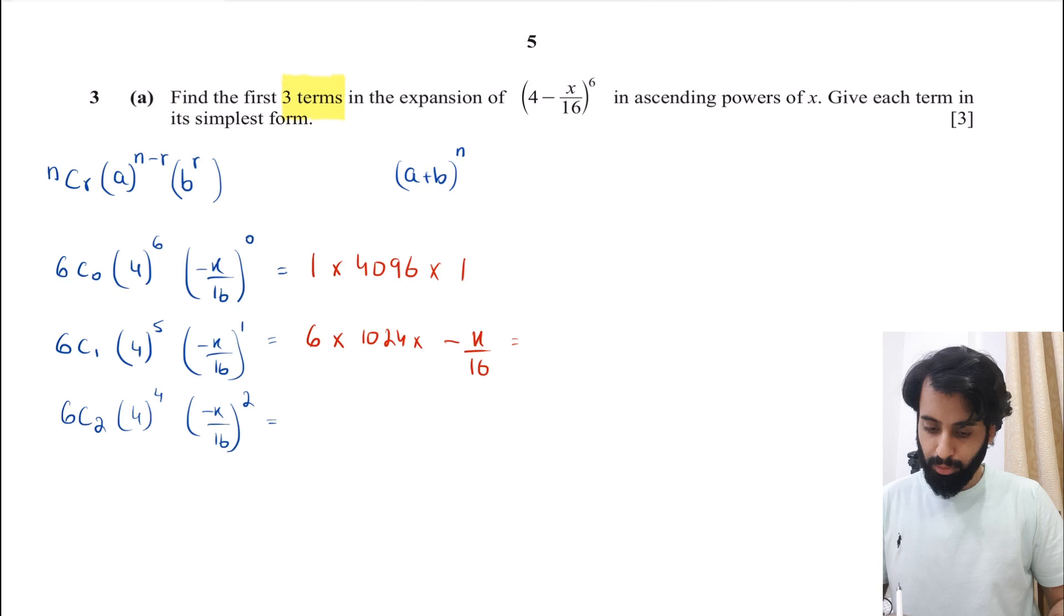And then you have 6C1, which is 6. You can use your calculator to work it out, × 4^5, which is 1024 × minus. Now remember, you have to take the sign into consideration also. So × (-x/16). Let's work this out. 6 × 1024 × (-x), well I can't do that in my calculator. So let's divide it by 16. The overall value, remember, is going to be negative. So we have minus 384 along with x.